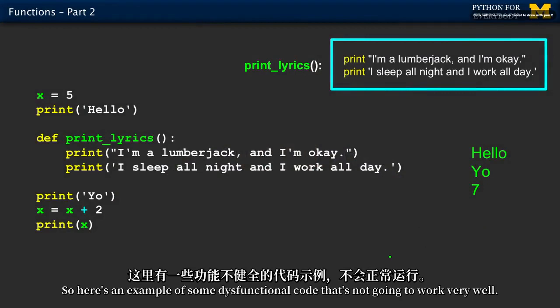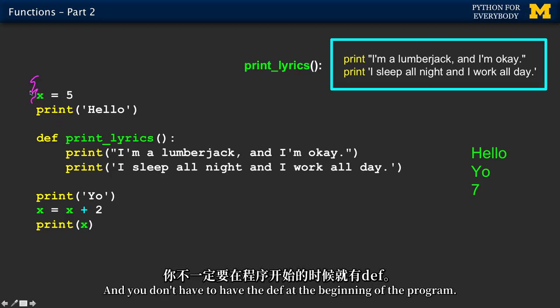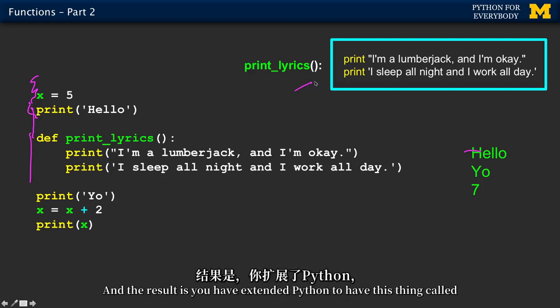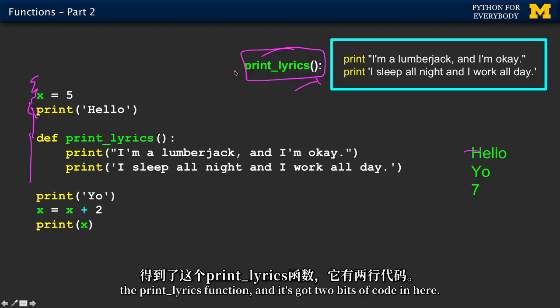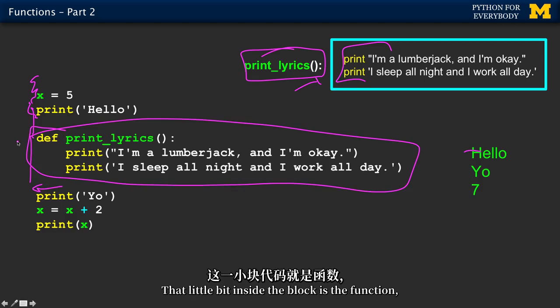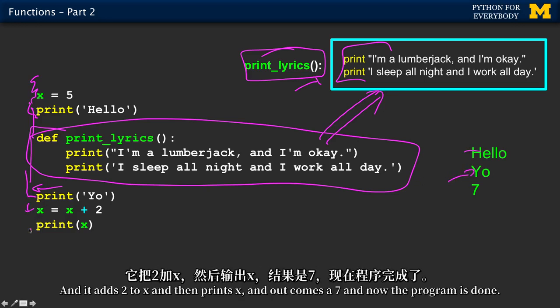So here's an example of some dysfunctional code that's not going to work very well. And so we come in here, we set x equals five. And you don't have to have the def at the beginning of the program. We do a print statement, so out comes hello. And then we do a def statement, and that cruises through here. And the result is you have extended Python to have this thing called a print_lyrics function. And it's got two bits of code in here. Now this print does a dedent, so that sort of blocks this off as that little bit inside the block is the function. That stuff's been copied up to there. And now it continues on, and it prints yo, and it adds two to x, and then prints x. And out comes a seven, and now the program is done.